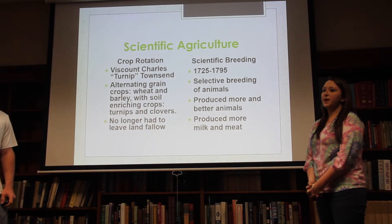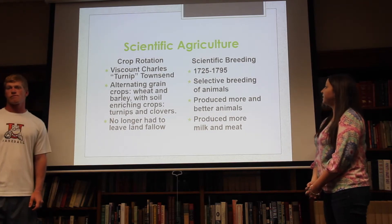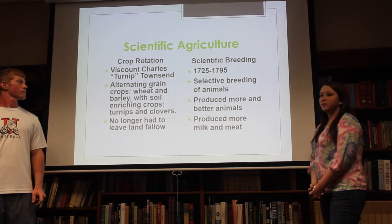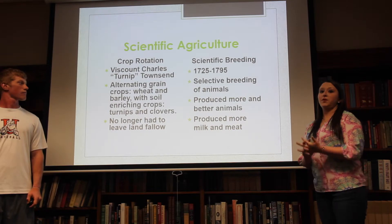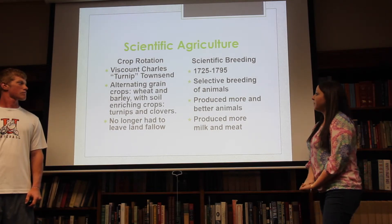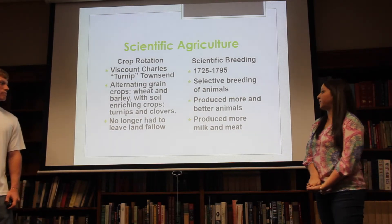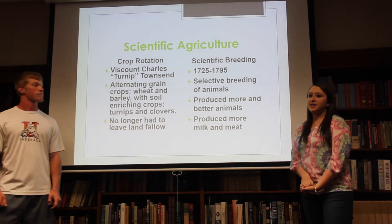Scientific breeding also emerged between 1725 and 1795. This involved selective breeding of animals for use on the farm, which produced more and better animals, yielding more milk and meat.